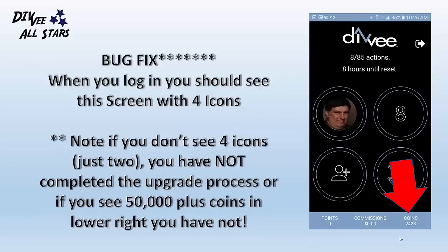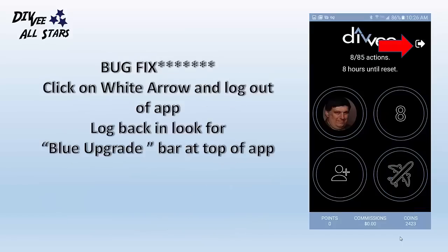Here's a bug fix. After you purchase your coins, when you log back in and you do not see the four icons shown on this screen, you have not completed the upgrade. If you look at the bottom right hand corner where you see coins, and you see 50,000 plus coins, you have not fully completed the upgrade. What you need to do is click on the white arrow, log out of the app, log back in, and look for the blue upgrade option bar at the top of the app.